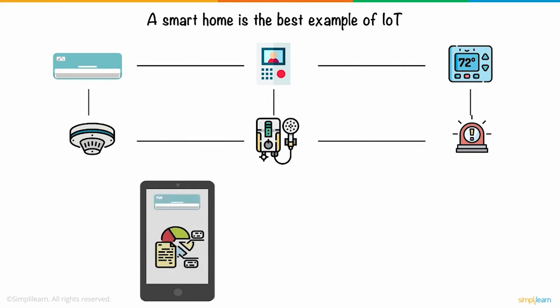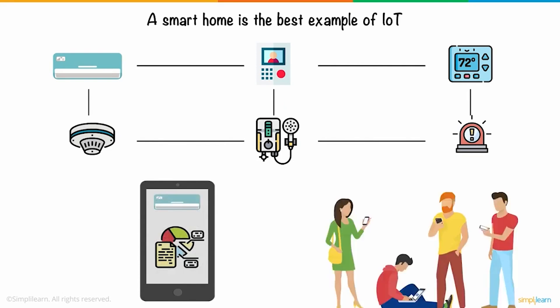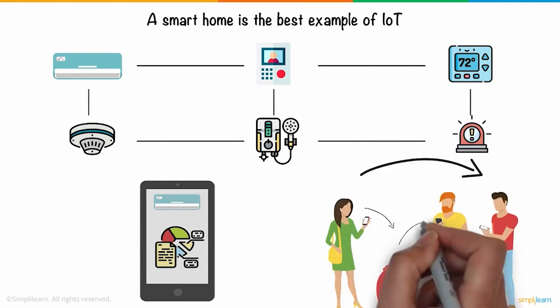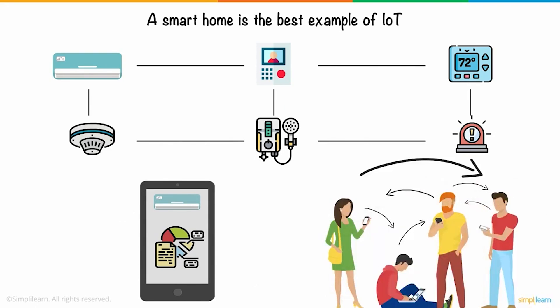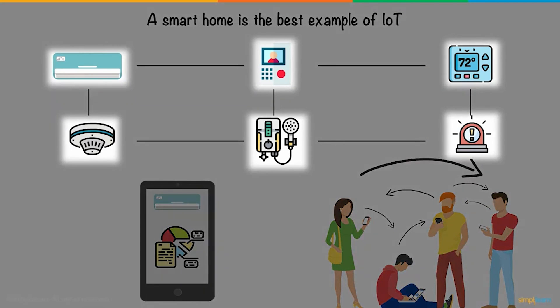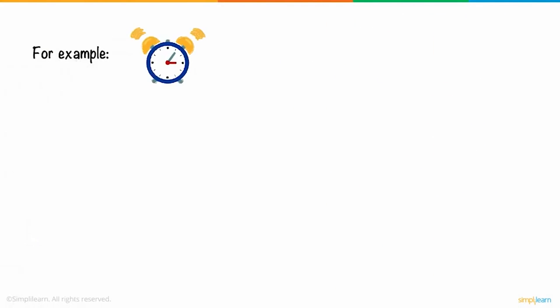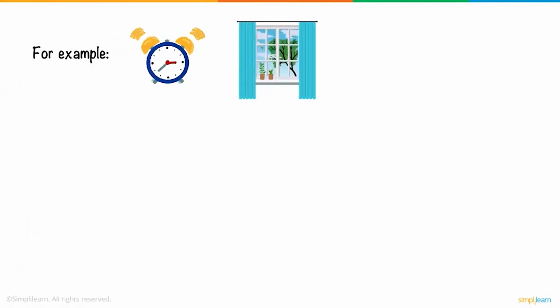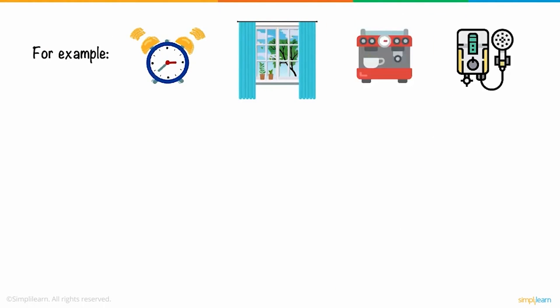Think about it — until recently, the internet helped people connect and interact with each other. But now, inanimate objects or things have the ability to sense the surroundings and interact and collaborate with one another. For example, in the morning when your alarm goes off, the IoT system can open the window blinds, turn on the coffee pot for you, and even turn on the water heater.